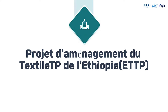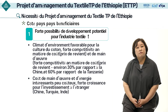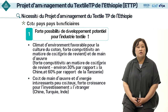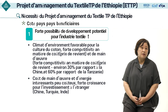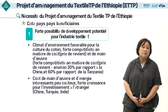Ensuite, je vais expliquer plus en détail les projets les plus représentatifs actuellement en cours de réalisation, c'est-à-dire le projet de l'aménagement du textile Technopark de l'Éthiopie et celui de l'Ouzbékistan. Le projet textile Technopark éthiopien a été lancé à la forte demande du pays bénéficiaire. L'Éthiopie est un pays ayant un fort potentiel de développement dans l'industrie du textile et bénéficie d'un environnement naturel très favorable à la culture du coton.